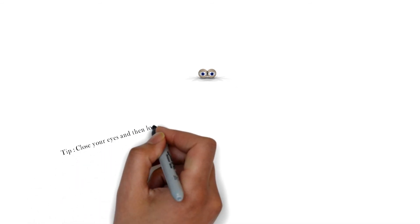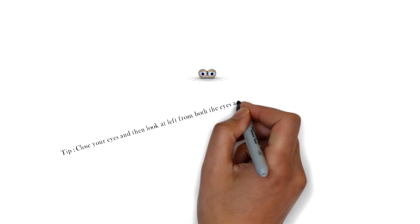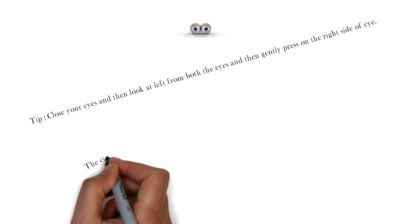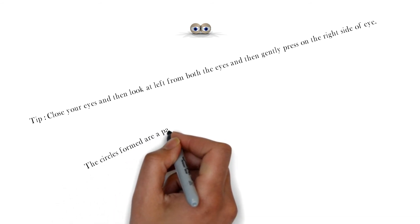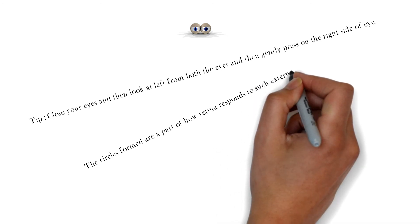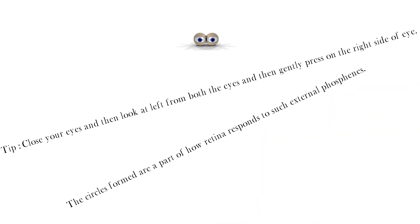The scientist uncle gave John a tip to see some hallucinations for himself. Close your eyes and then look left from both the eyes, then gently press on the right side of eye. You will observe some circles on the left side, which are a part of hallucination.